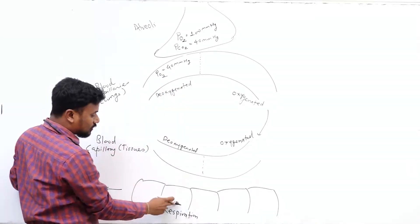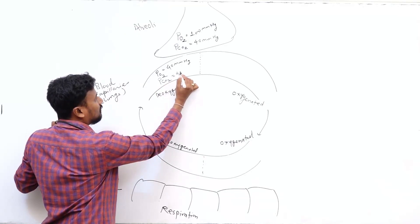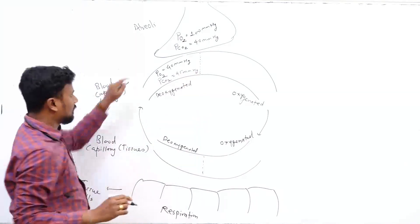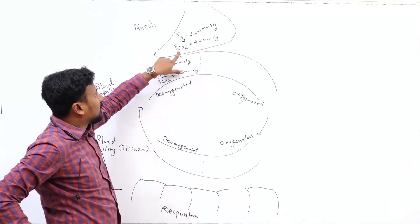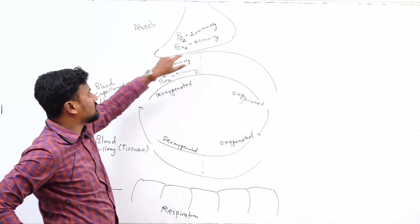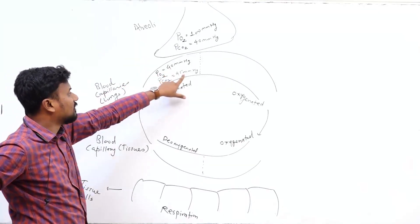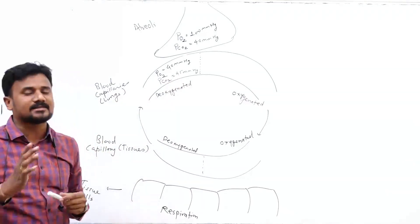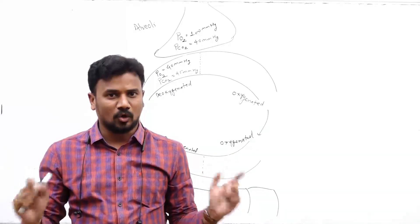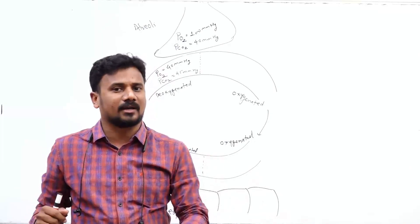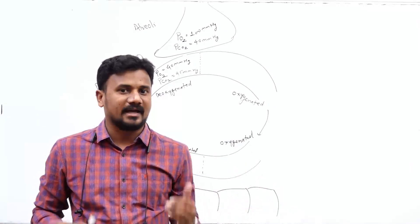Since this is deoxygenated blood coming from tissues, it has more CO2, so partial pressure of CO2 is about 45 mm of Hg, and partial pressure of oxygen is about 40 mm of Hg. Look at the values: in alveoli, partial pressure of oxygen is 100 mm of Hg and CO2 is 40 mm of Hg; in deoxygenated blood reaching the lungs, partial pressure of oxygen is 40 mm of Hg and CO2 is 45 mm of Hg. Gases diffuse from area of high partial pressure to area of low partial pressure. The diffusion capacity of CO2 is around 20 times more than that of oxygen.